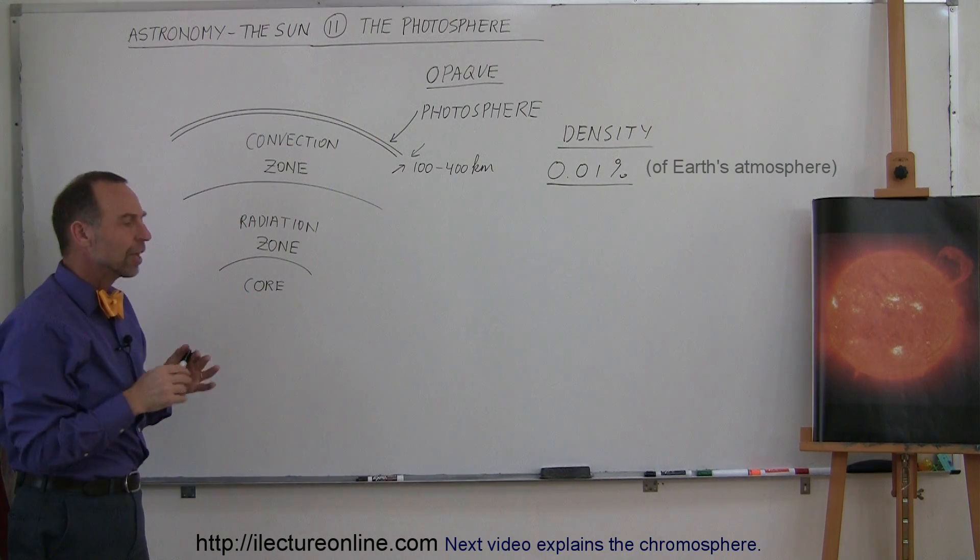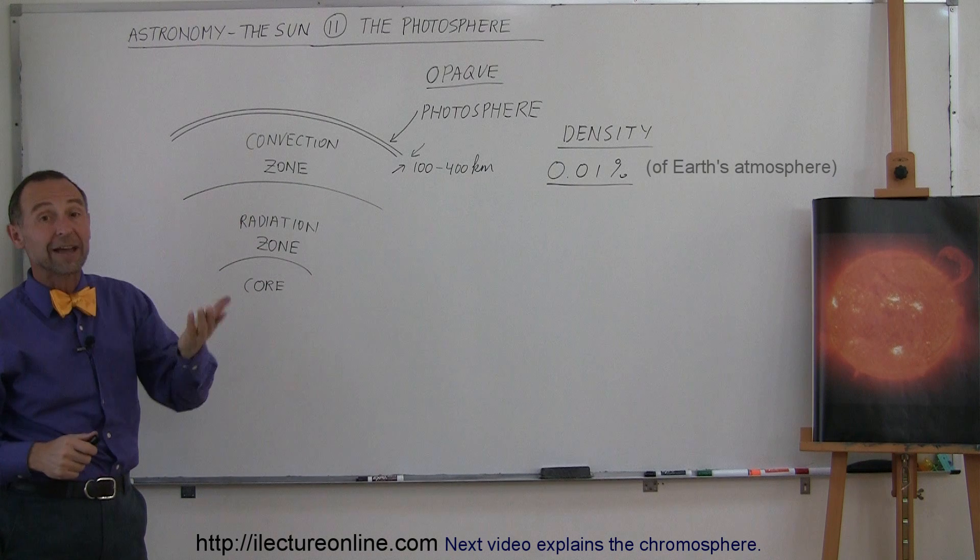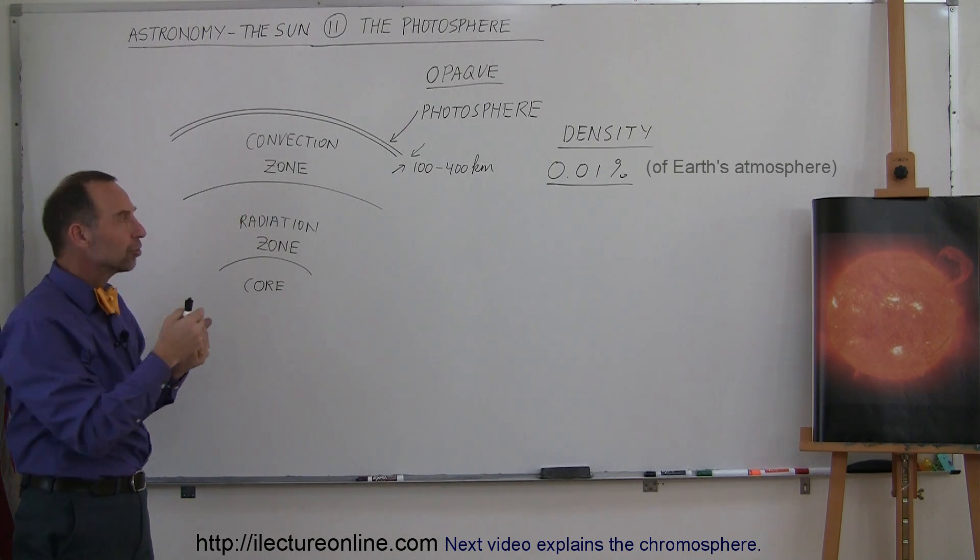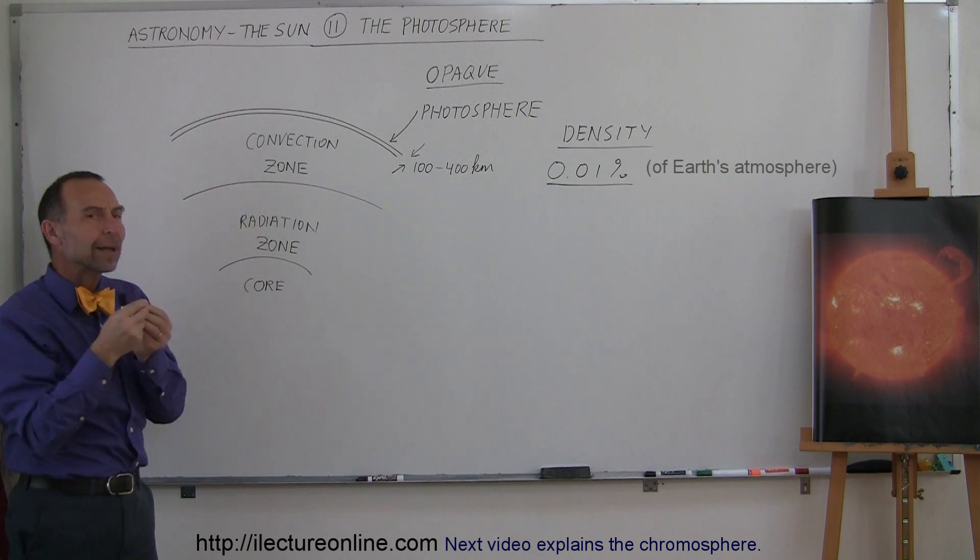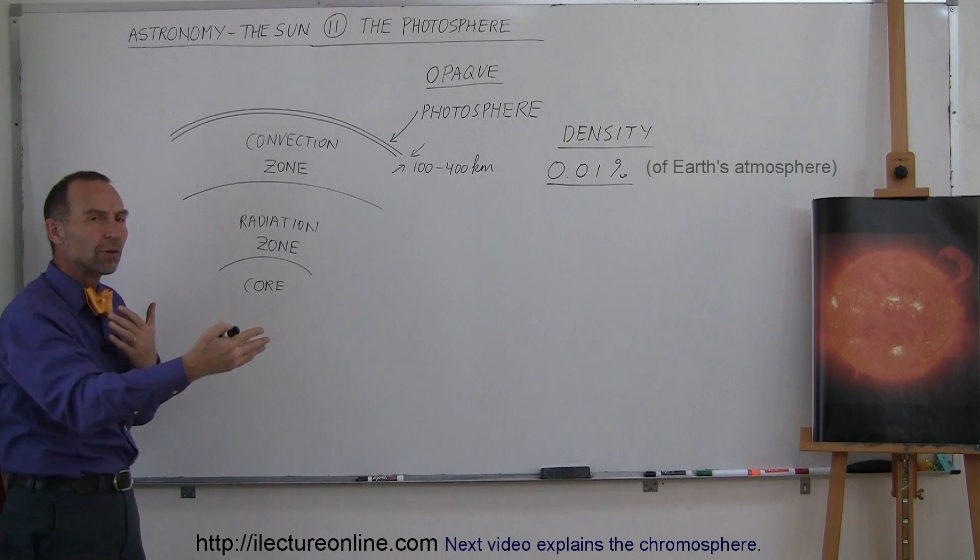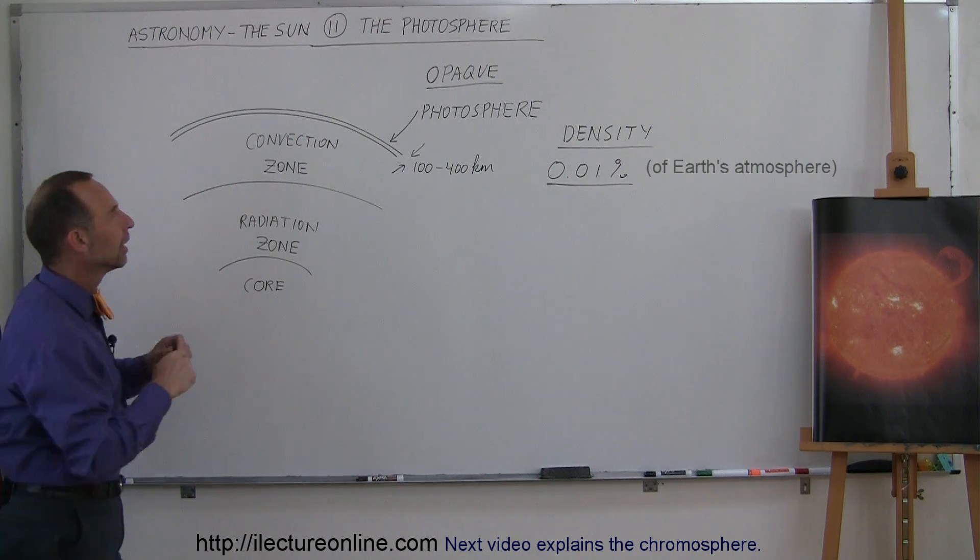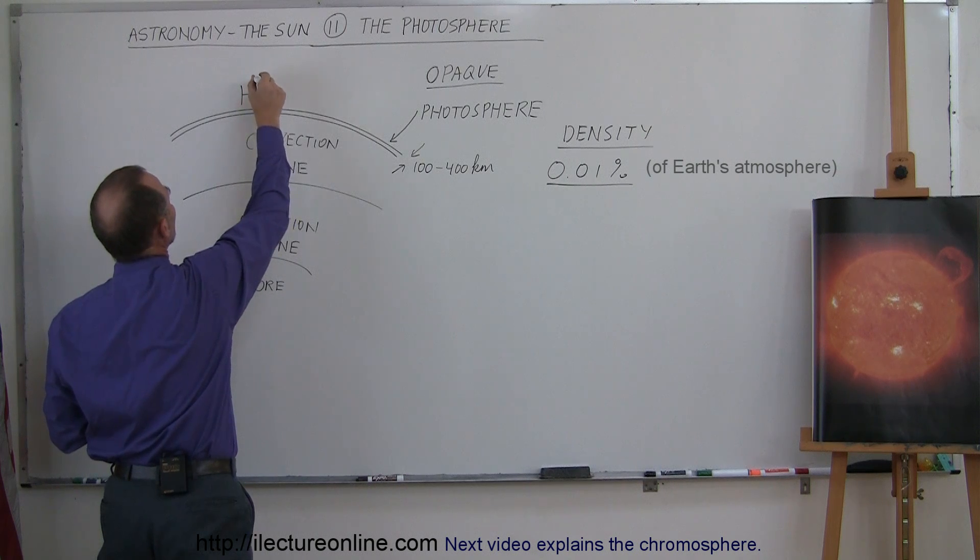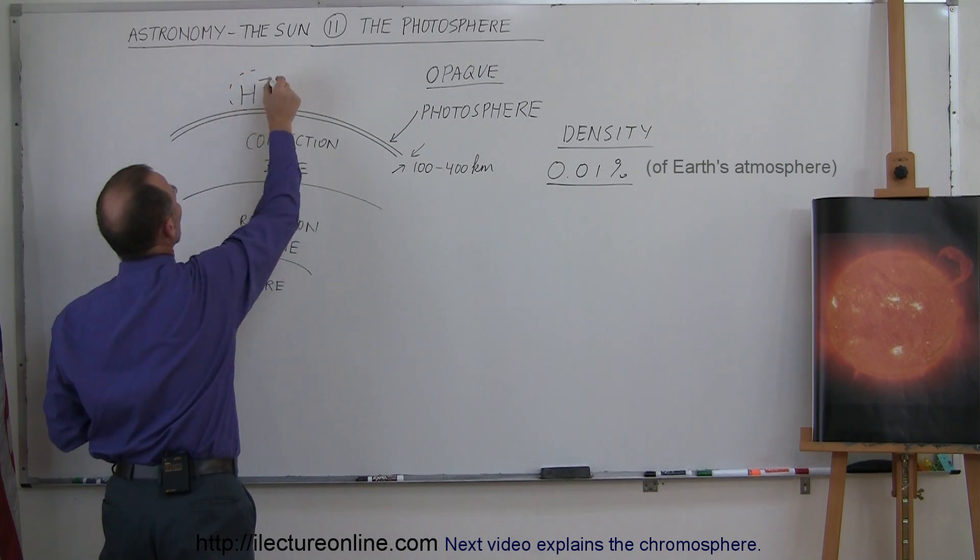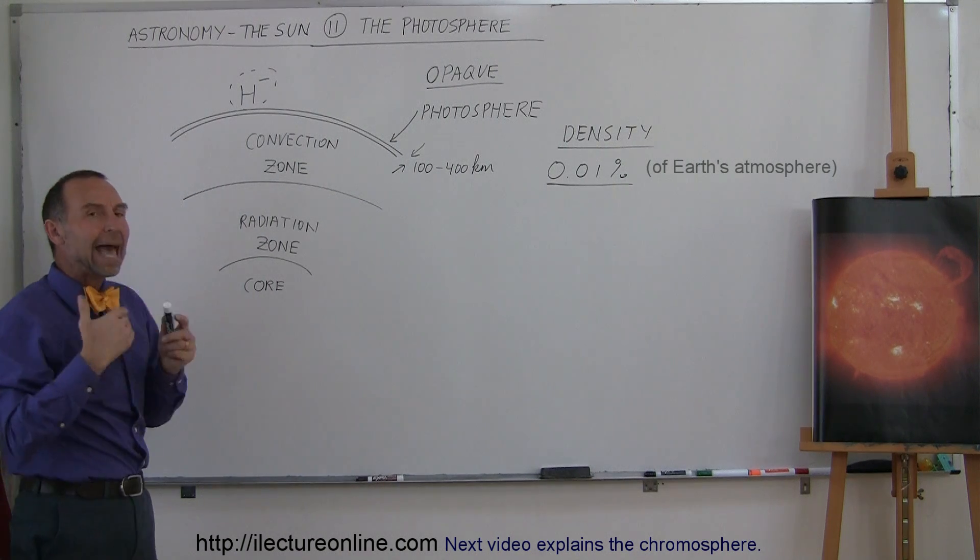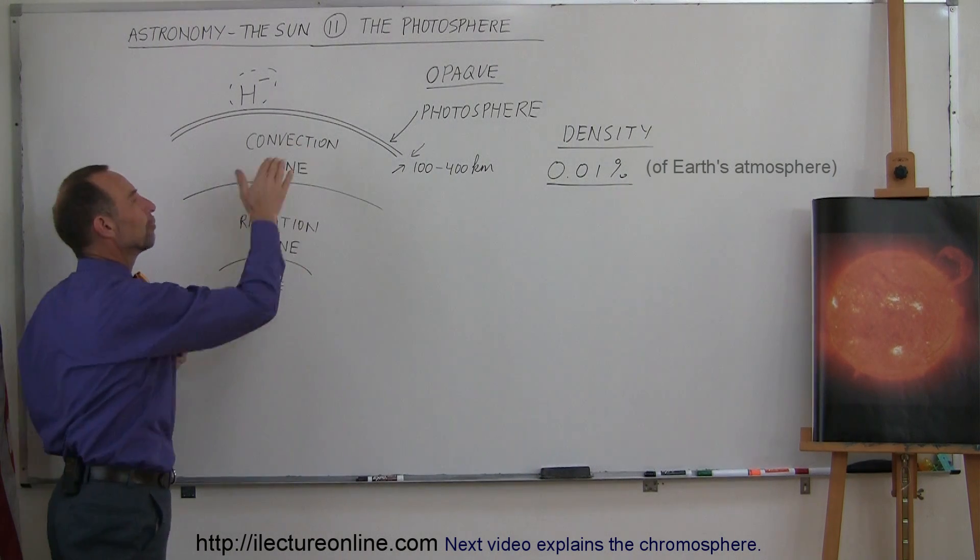So what happens there is that the photosphere is at a temperature of roughly 5800 Kelvin, which causes the hydrogen in the photosphere to sometimes acquire an additional electron. Sometimes it gets stripped of its electron, sometimes it acquires an additional electron. And so when hydrogen ends up with an additional electron, it is now negatively charged. So it now has two electrons, and those two electrons play havoc with the photons trying to make it through the photosphere.